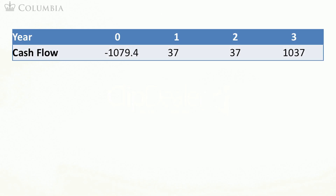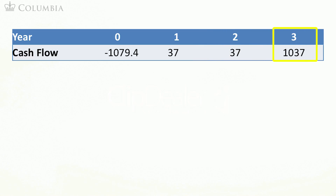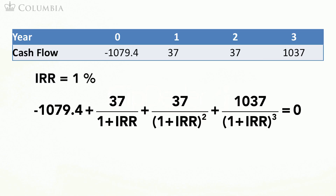Let's continue with the same example. Now that we have all the cash flows associated with the bond, let's compute the IRR of this transaction. Recall from the last module that the IRR of a project is the rate of return that makes the NPV of that project equal to zero. In this case, our project is the purchase of the bond. We need to make an investment of $1,079.4, and in return, we obtain cash flows of $37 both one and two years from now, and $1,037 three years from now. We need to solve the following equation, and using Excel, we find that the IRR is 1%.